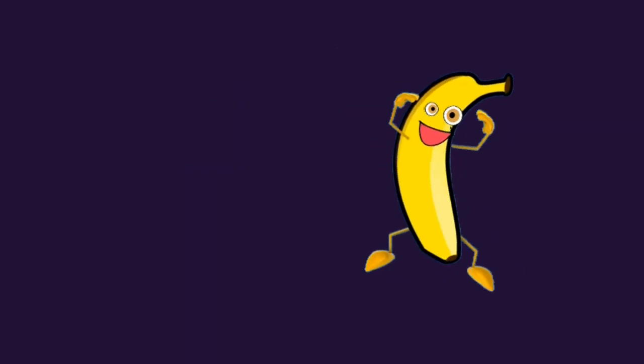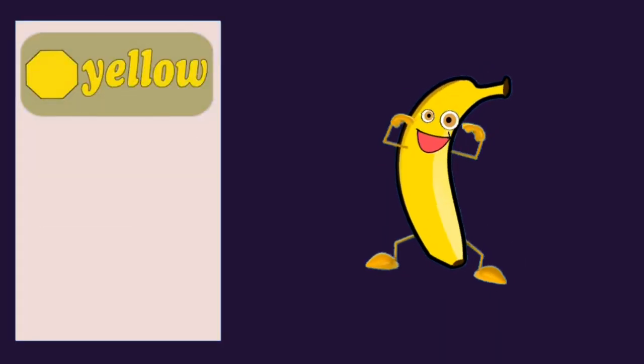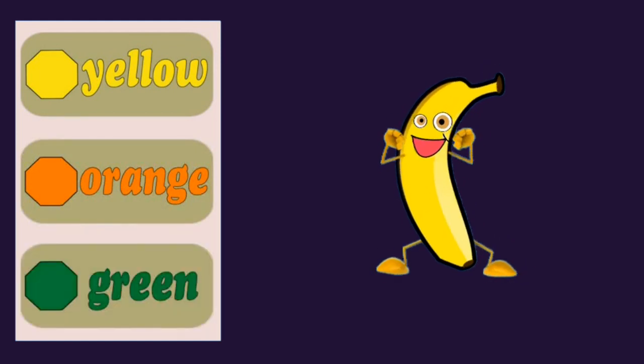What is the color of banana? Yellow. Orange. Green.